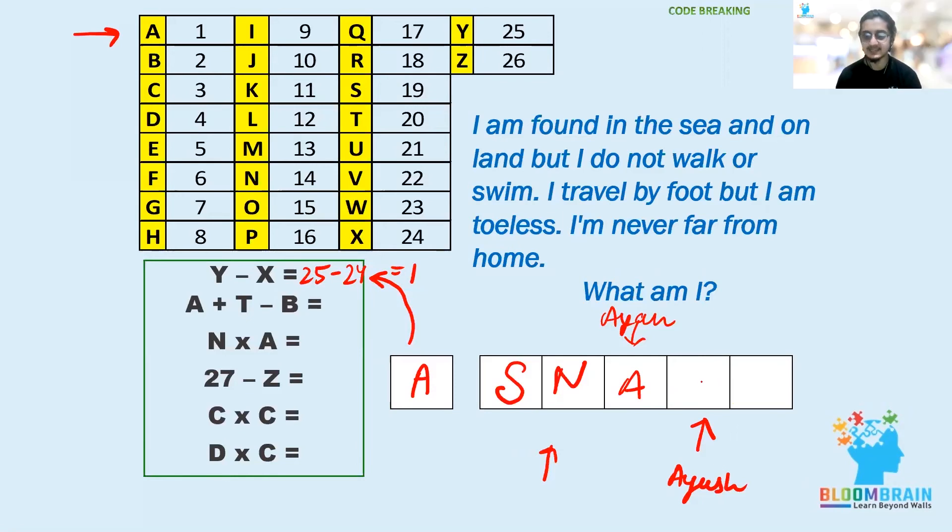9 is I. Last one, yes! So the answer is snail. I am found in the sea and on the land, but I do not walk or swim. I travel by foot but I am toeless. I am never far from home. So what you did is you put the value of numbers into alphabets and you solved the numbers. This is the way we are going to do algebra.